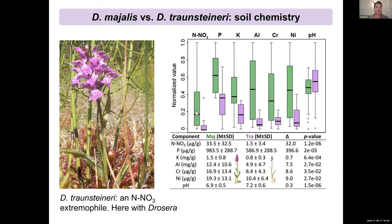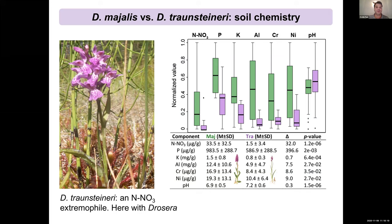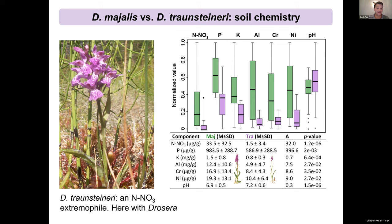The data shows Majalis in green and Traunsteineri in purple. Traunsteineri prefers sites with very low levels of macro and micronutrients — in particular, nitrate is very different, with Traunsteineri appearing to be an extremophile with zero available nitrate in most of its sites across Europe. You can see that Traunsteineri often grows associated with Drosera, a carnivorous plant that grows in very nitrate-poor environments because it gets its nitrate from insects.